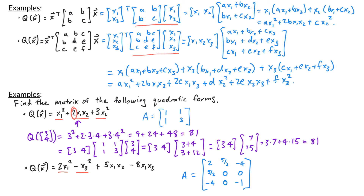So that's where I'll end this video. In our next video, we'll talk about rewriting quadratic forms so that they don't have any cross product terms, and we'll do this by making a change of coordinates.